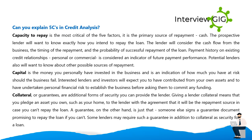Lenders and investors will expect you to have contributed from your own assets and undertaken personal financial risk to establish the business before asking them to commit funding. Collateral or guarantees are additional forms of security you can provide the lender. Giving a lender collateral means pledging an asset you own, such as your home, as the repayment source in case you can't repay the loan. A guarantee is when someone else signs a document promising to repay the loan if you can't. Some lenders may require both collateral and a guarantee.